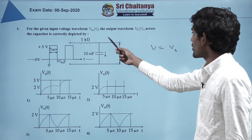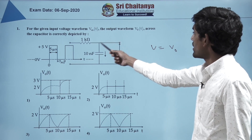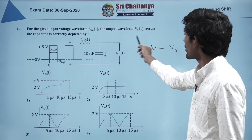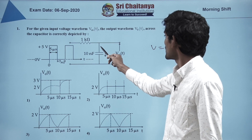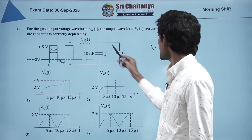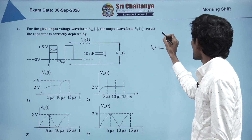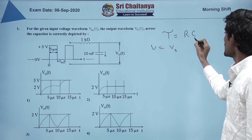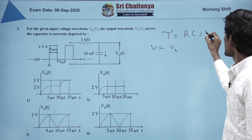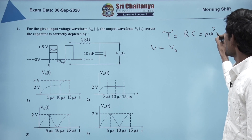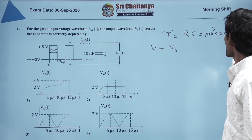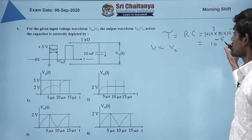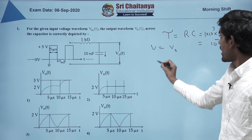For the given input voltage waveform, the output waveform across the capacitor is correctly depicted by. This is a capacitor and there is a resistor also. We can calculate immediately the time constant tau equals R into C, that gives us 1 into 10³ into 10 into 10⁻⁹, that is 10⁻⁵ seconds.